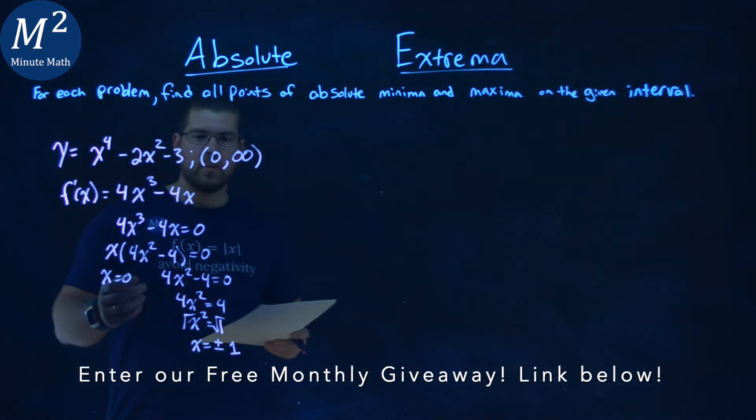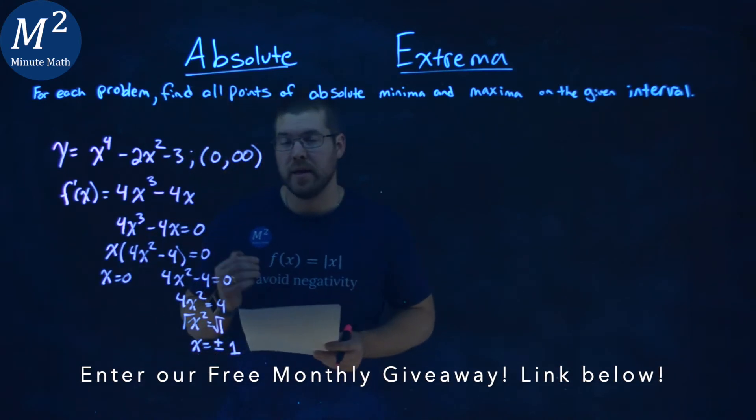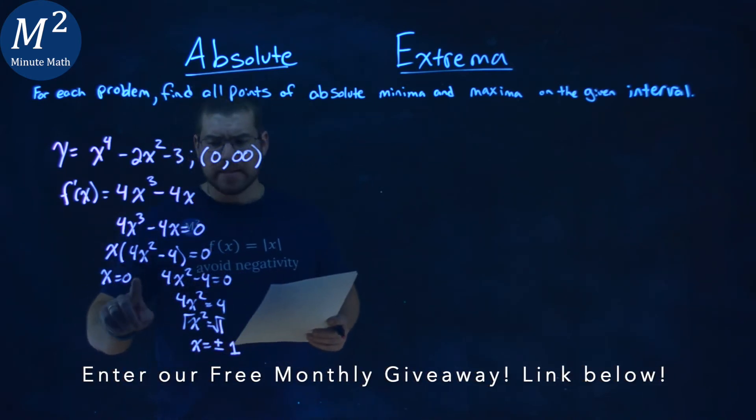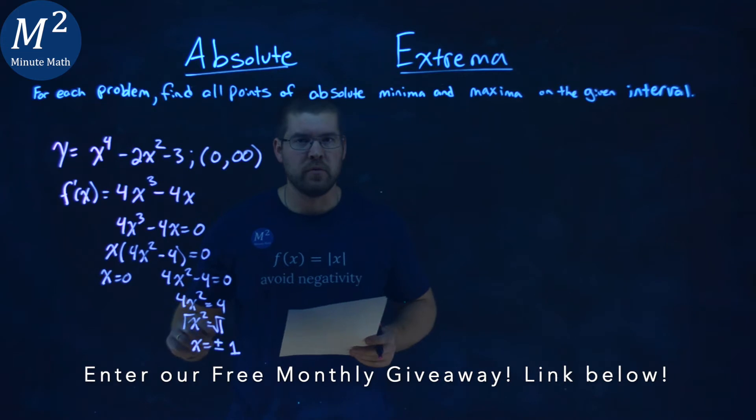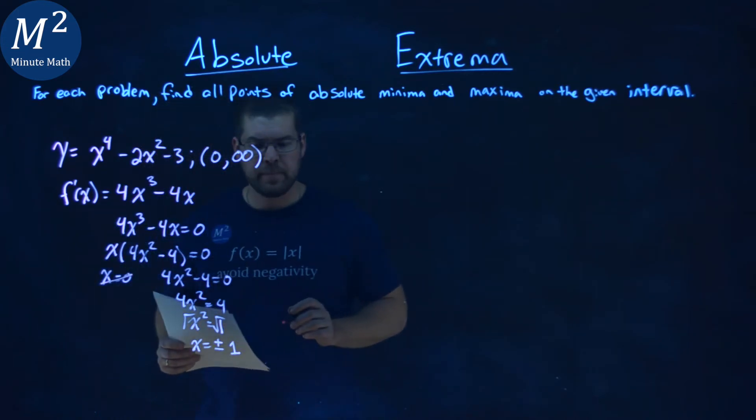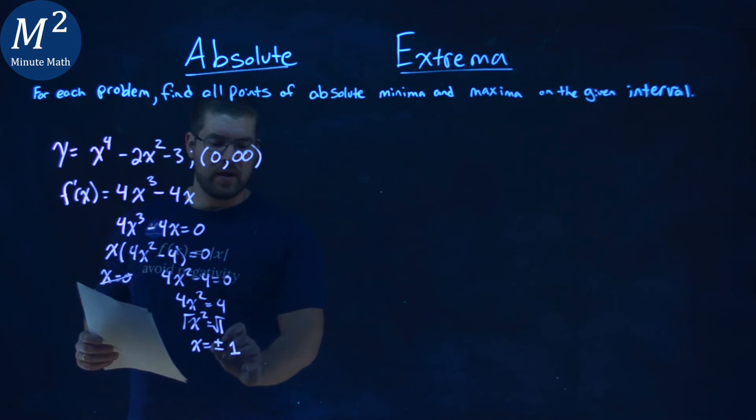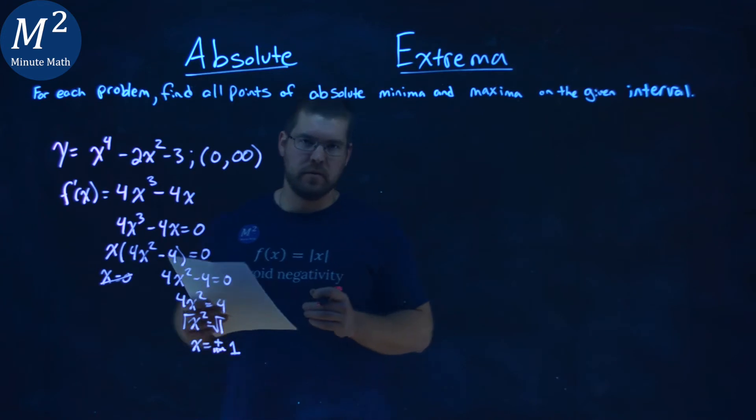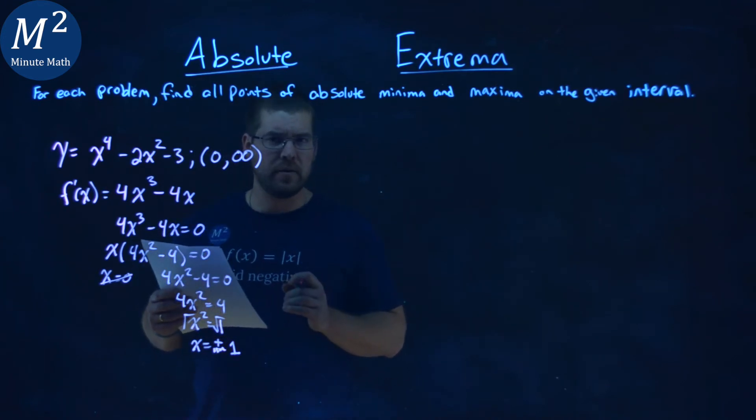Now we have to look which values are within our interval here. Well, 0 is actually not in our interval. Remember, it's not included with that parenthesis, so we don't need to worry about that. Negative 1 is outside of the interval as well, so we don't worry about that. But positive 1 is within our interval.